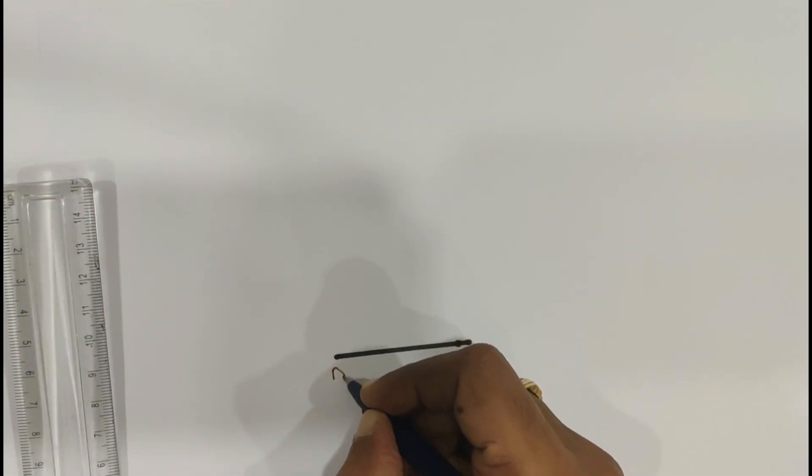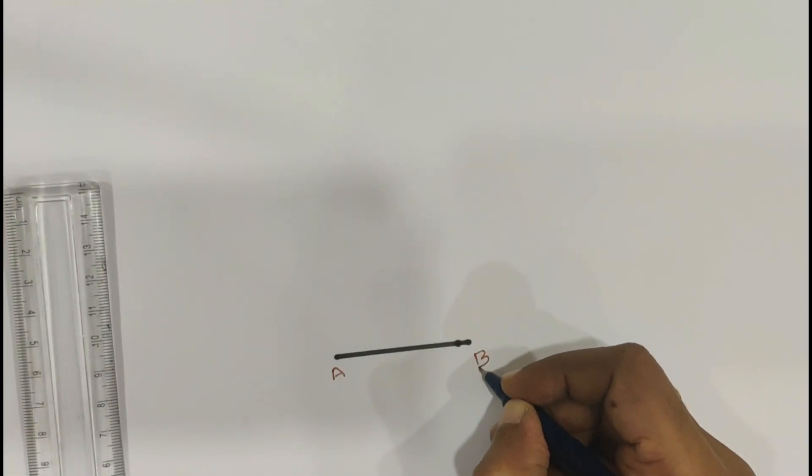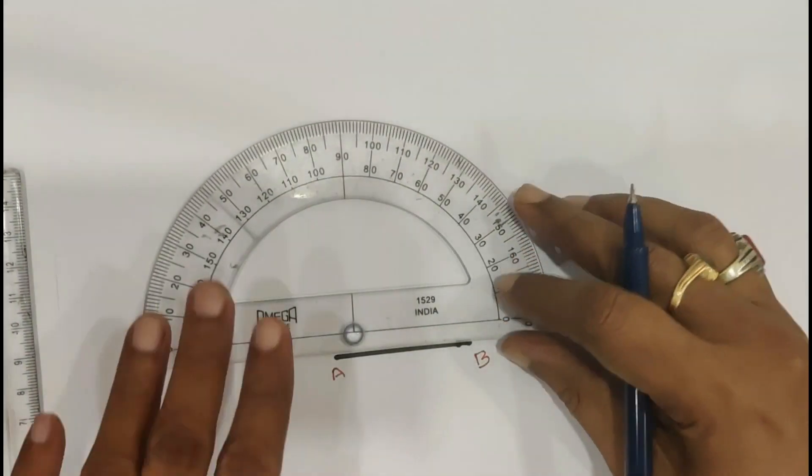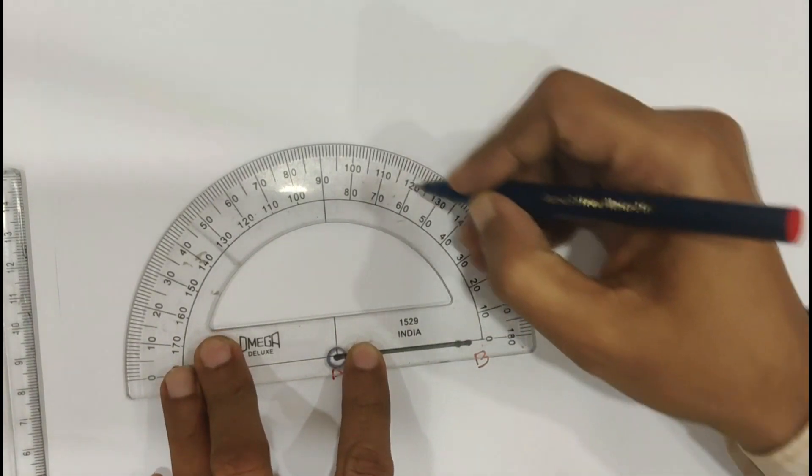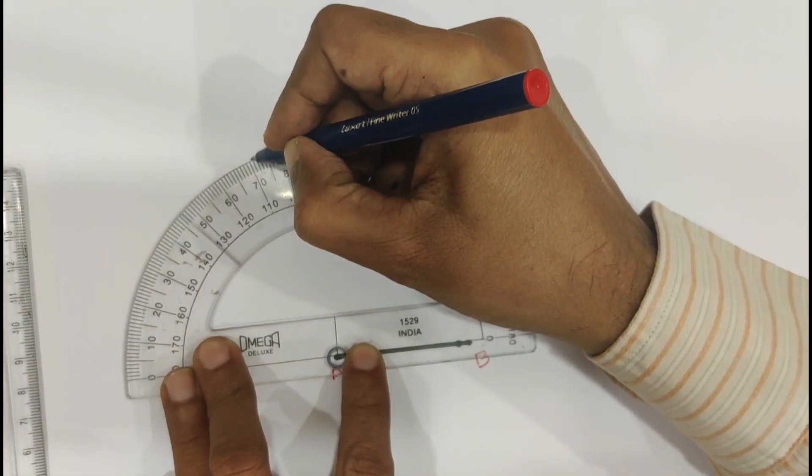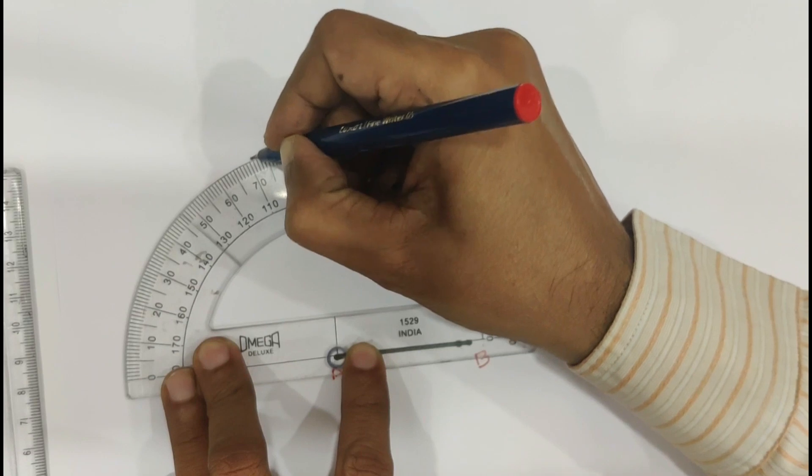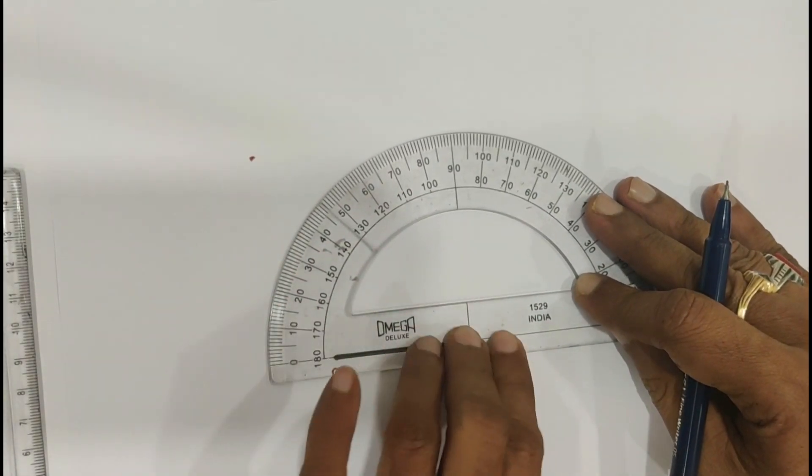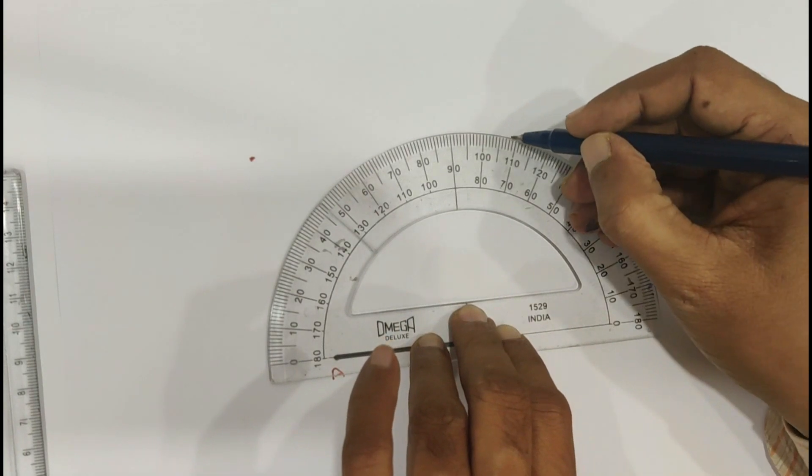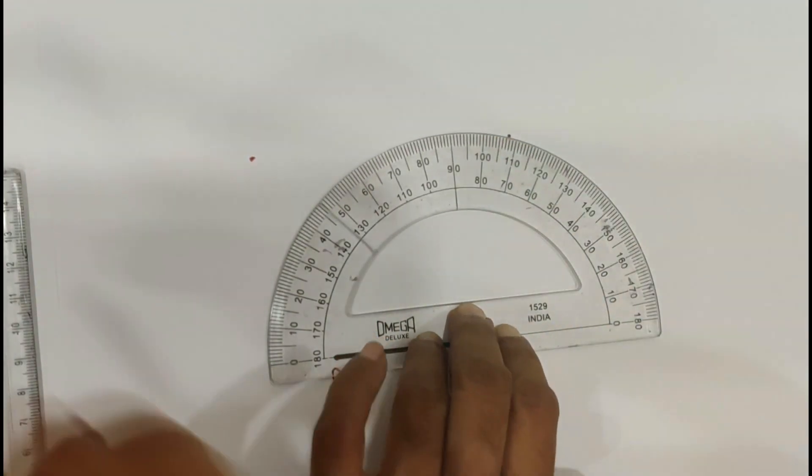50 mm is the given side length. Then name this one as AB. With protractor, included angle as 108 degrees. Here also include angle as 108 degrees.